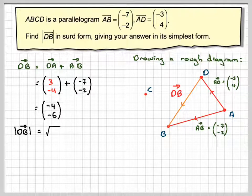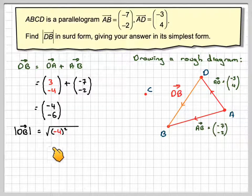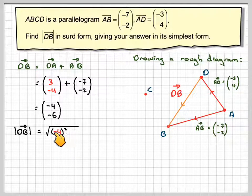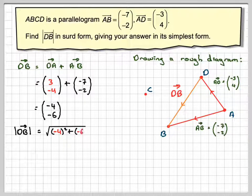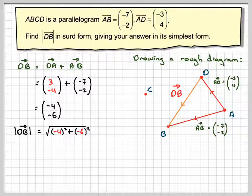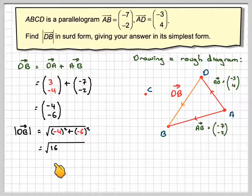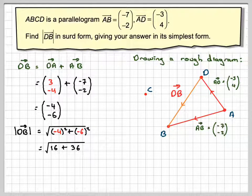Right, we need to find the magnitude of this vector. So the magnitude, this is what this means. So we have to do minus 4 squared. Now be careful to put the minus 4 into brackets. Minus 4 squared plus minus 6 squared, which is going to give me the square root of 16 plus 36.